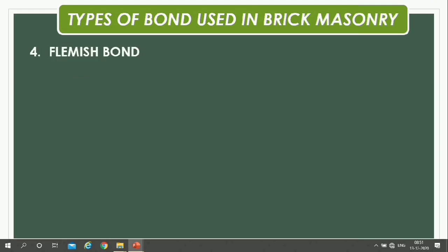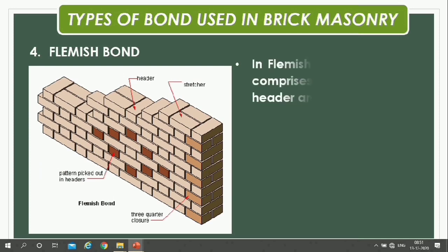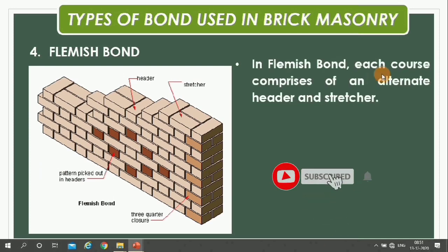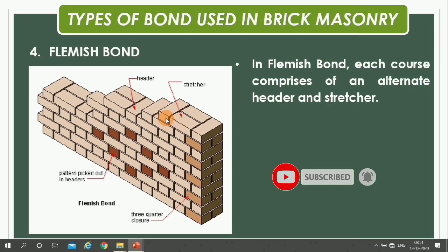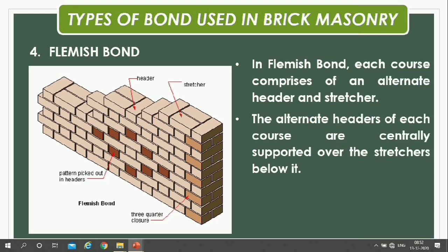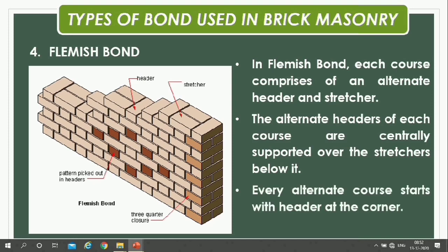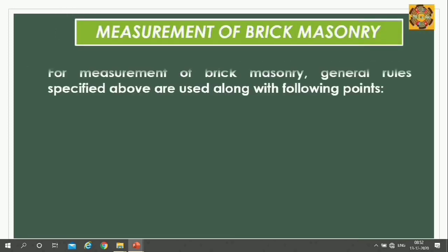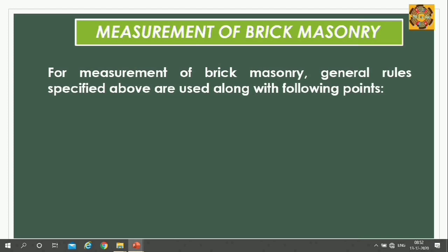In Flemish Bond, each course comprises alternate headers and stretchers. The alternate headers of each course are centrally supported over the stretchers below. Every alternate course starts with a header at the corner and a header at the center.